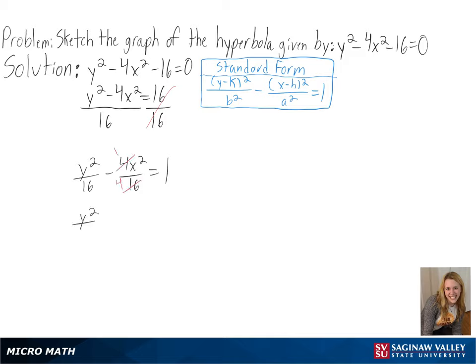After simplifying, we get y squared over 16 minus x squared over 4 equals 1 as our equation in standard form.